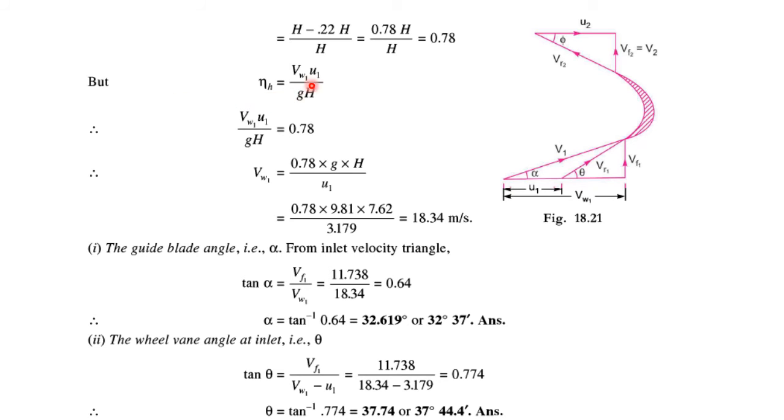But hydraulic efficiency equals Vw1·U1/(g·H), so this should equal 0.78. From this relation we can find Vw1 = 18.34 m/s.